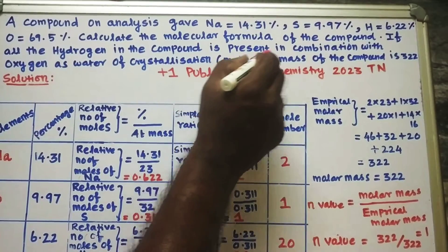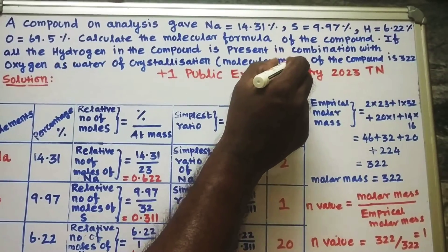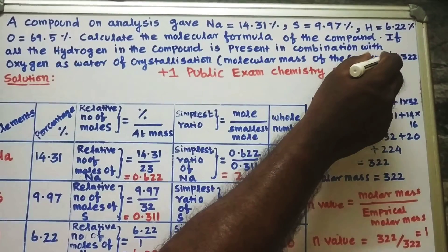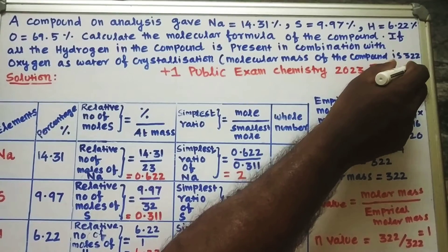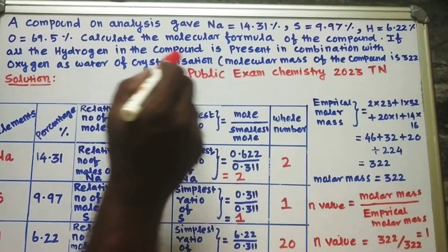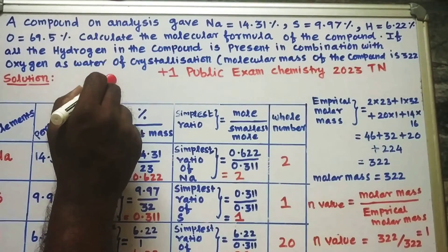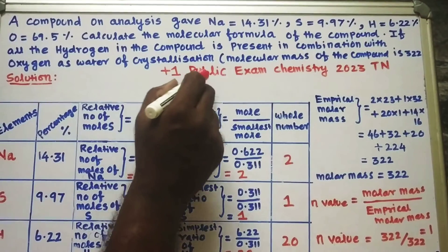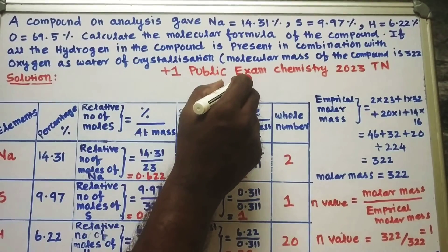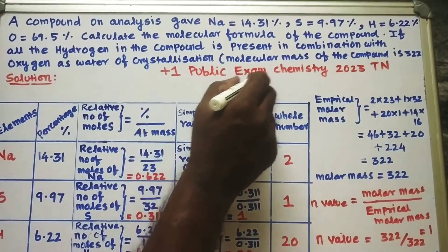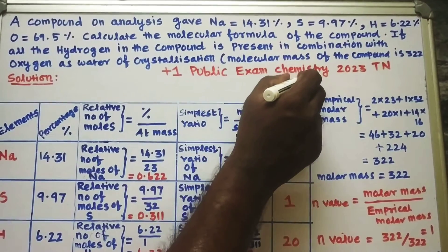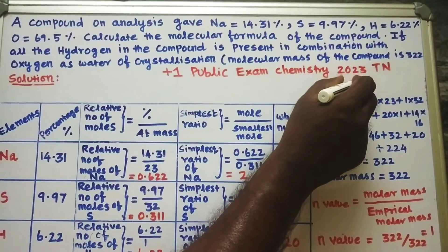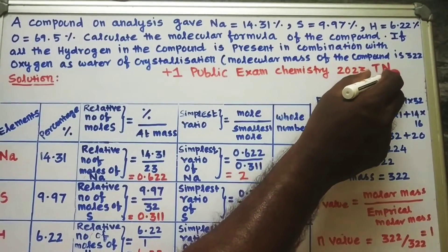The molecular mass of the compound is 322. This question was asked in the Plus One public exam chemistry paper in the year 2023 in Tamil Nadu.